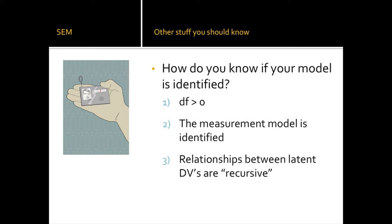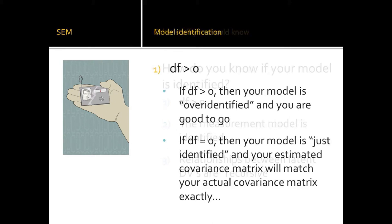If degrees of freedom are greater than zero, you won't be trying to do too much with too little. If you estimate too many parameters relative to your measured variables, degrees of freedom go below zero and the computer won't run your model. You want an over-identified model. There's a special case when degrees of freedom equals zero: some fit statistics won't work, and your estimated covariance matrix will actually match your data covariance matrix — which doesn't allow meaningful model fit assessment.